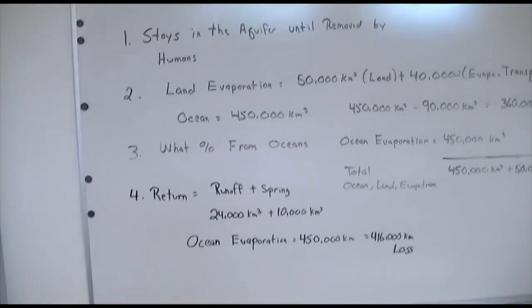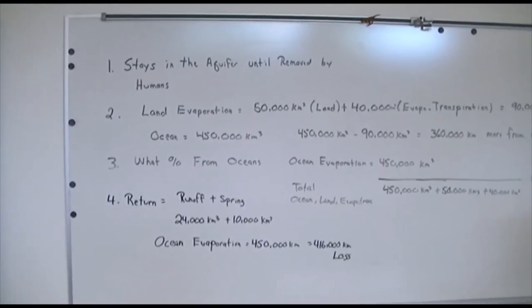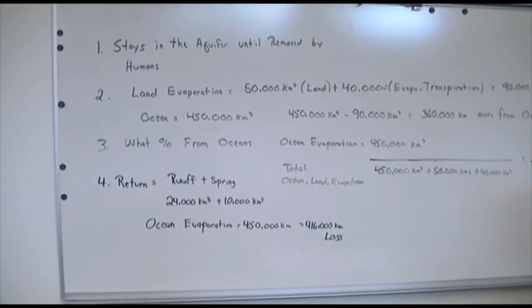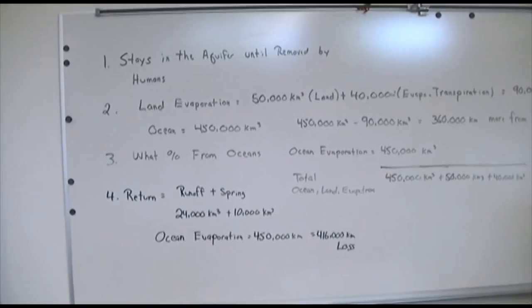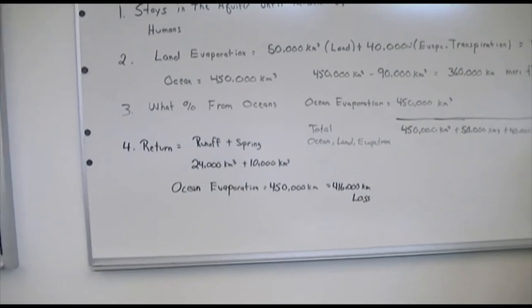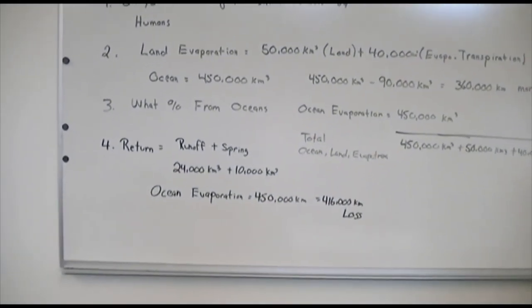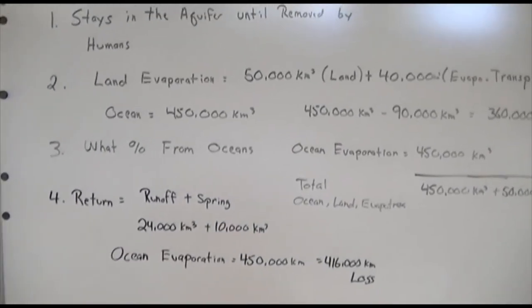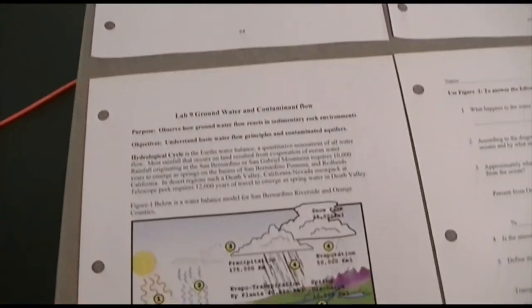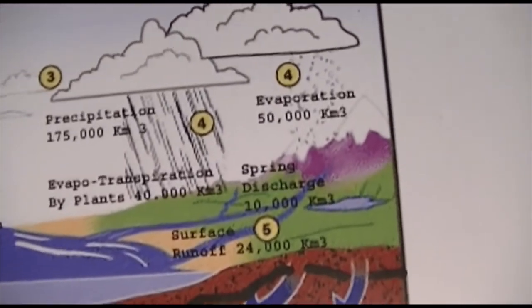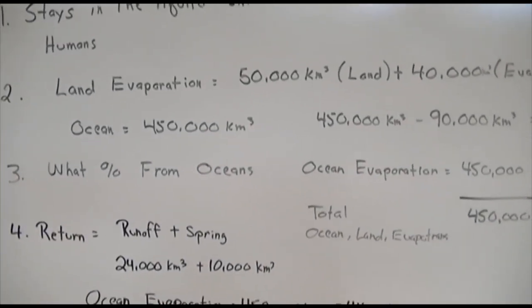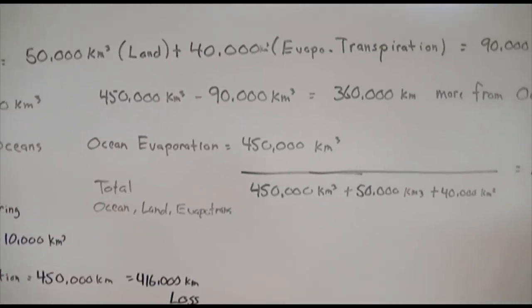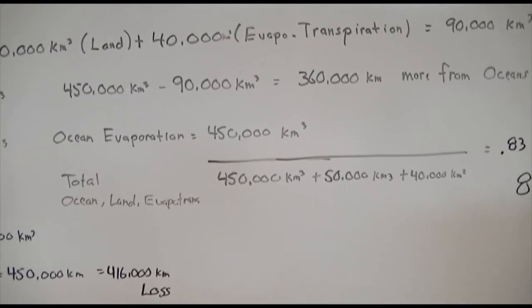The answer to question one: water that goes into the aquifer basically stays in the aquifer until it's removed by humans. Question two deals with evaporation over the land versus the oceans — how much more evaporation occurs over the oceans than the land. Land evaporation is 50,000 cubic kilometers, and there's an additional 40,000 cubic kilometers called evapotranspiration.